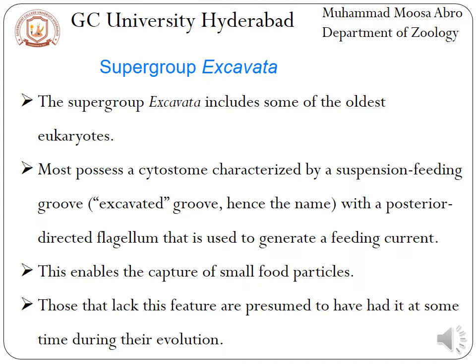The supergroup Excavata includes some of the oldest eukaryotes. They possess a cytostome, which is a special mouth-like structure by which food enters into the body. The name 'Excavata' comes from the cytostome, which is characterized by a suspension feeding group that is excavated or dug — hence the name.